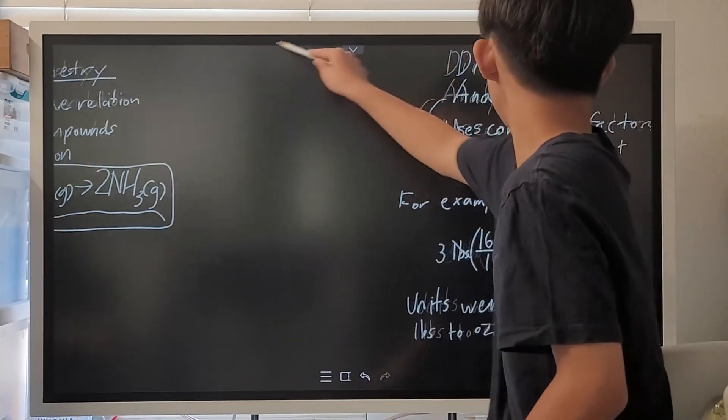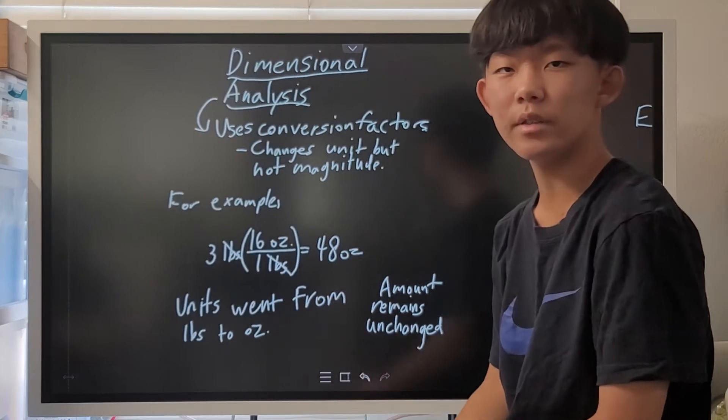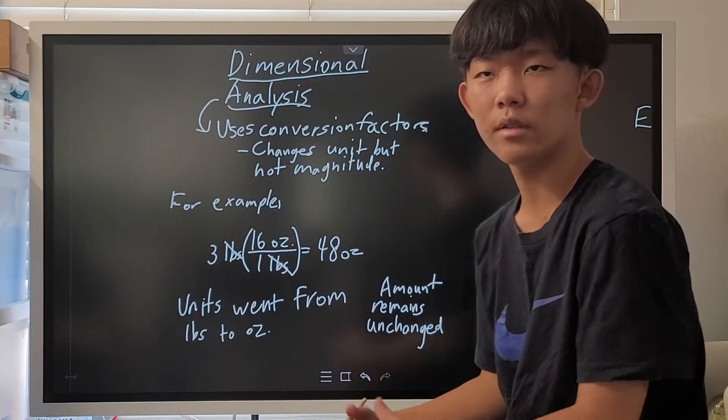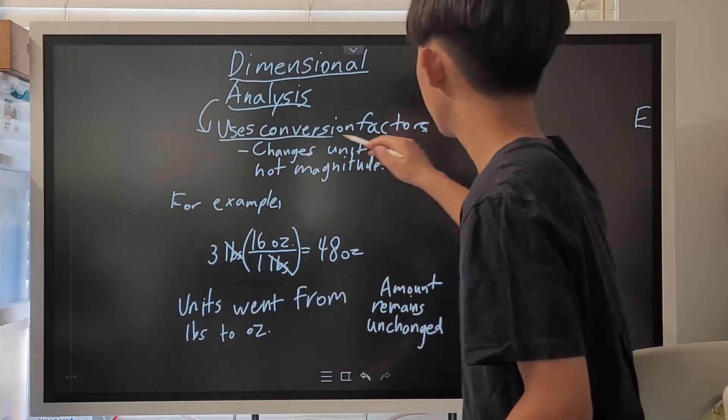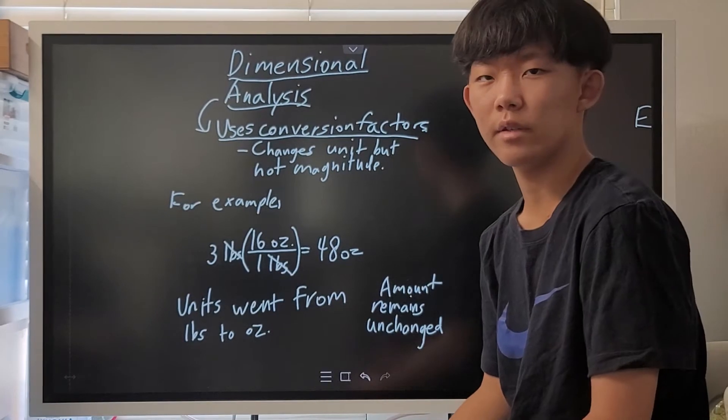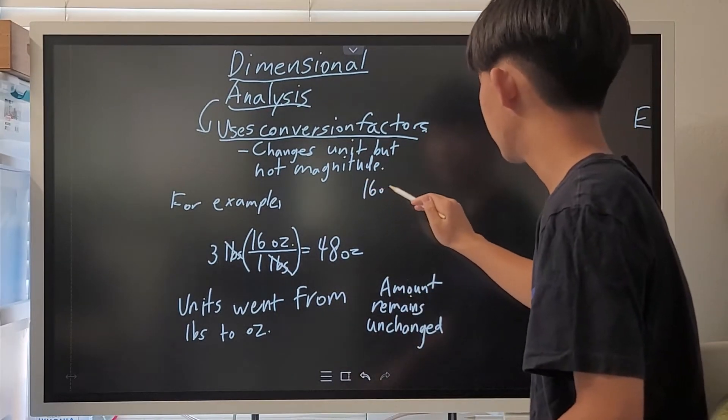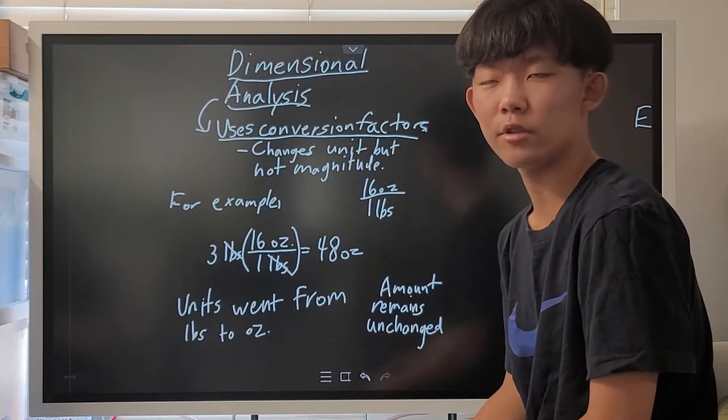The very basic part of stoichiometry starts at dimensional analysis. Dimensional analysis is simply just converting from one unit to another unit by using conversion factors. A conversion factor is just the thing you learn in school, something like 16 ounces per pound. This is an example of a conversion factor.